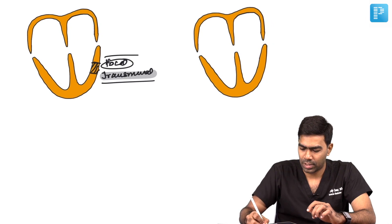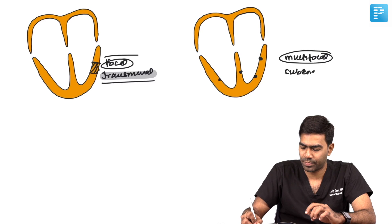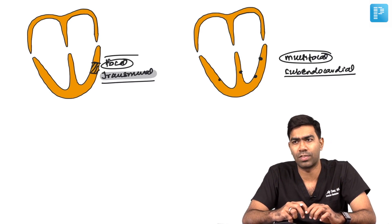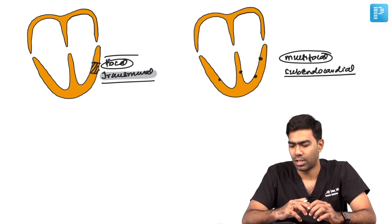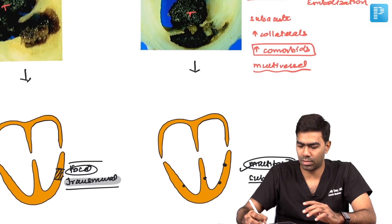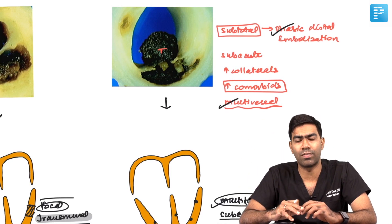NSTACS patients tend to have multifocal and subendocardial infarcts. The subendocardial portion is the most vulnerable to ischemia, so a subtotal occlusion affects it first. It is multifocal for two reasons: multivessel involvement, and phasic distal embolization producing a shower of emboli to different areas, causing infarction at multiple sites.